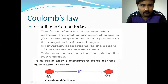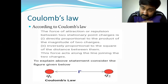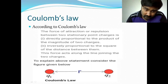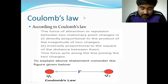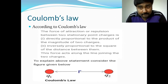According to Coulomb's inverse square law, the magnitude of force of attraction or repulsion between two point charges at rest is directly proportional to the product of the magnitude of the two point charges, and inversely proportional to the square of the distance between the two point charges.